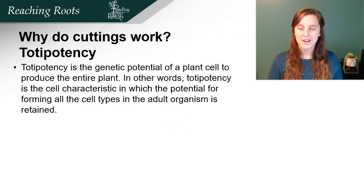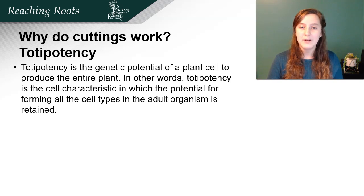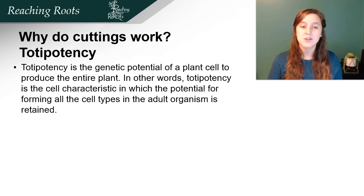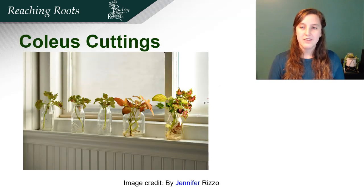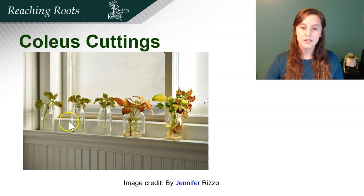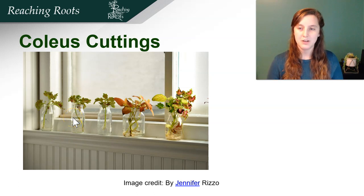So why do these cuttings work? If you cut off a part of a human or an animal, it doesn't grow back the whole organism. But plants have what's called totipotency — the genetic potential of plant cells to produce the entire plant. In other words, totipotency is a cell characteristic in which the potential for forming all the cell types in the adult organism is retained in each cell. For example, a stem cell can become a root cell or a leaf cell. These coleus cuttings show roots developing before transfer into soil media.